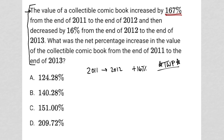I'm going to say in 2011 the comic book was $100. I use $100 because it becomes very easy to calculate: in 2012 the value was $267. I'm just adding 167% to the $100 I started with — $100 plus 167% is $267.